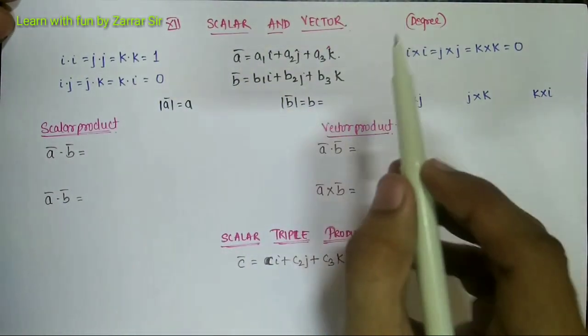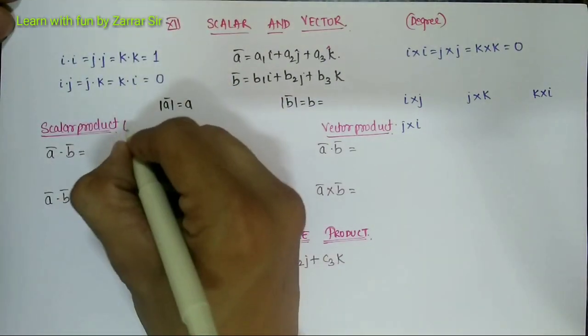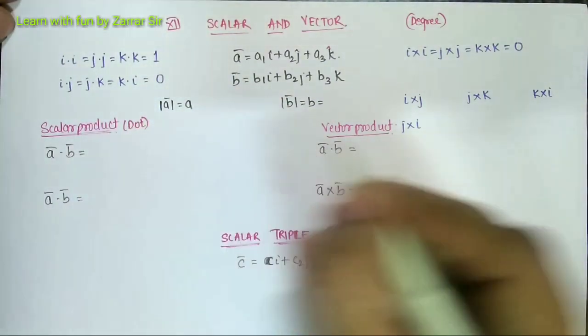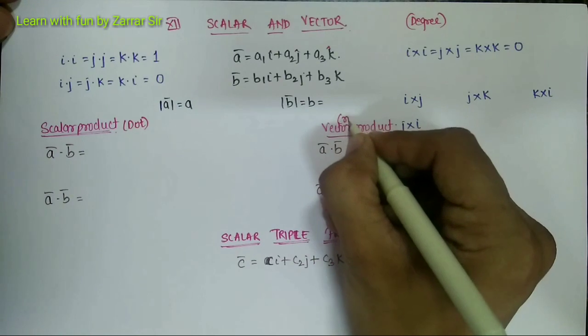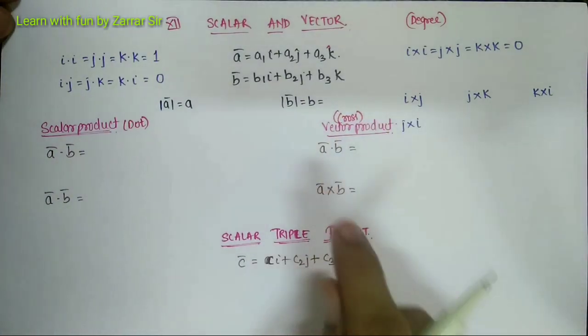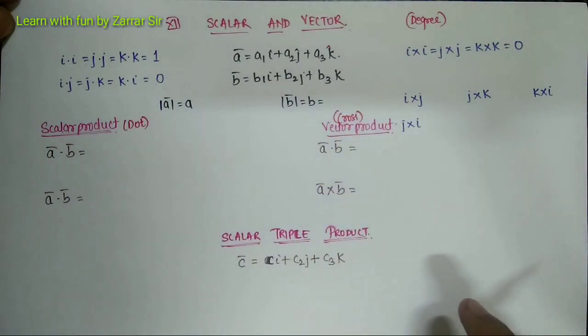Scalar product is also known as dot product. Vector product is also known as cross product. If I need to do its dot product and cross product, what will happen?